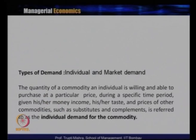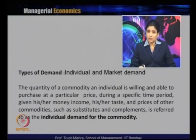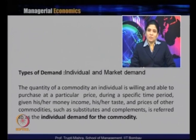There are different types of demand. The first is individual demand and market demand. Individual demand is the quantity of a commodity an individual is willing and able to purchase at a particular price during a specific time period, given their money income, taste, and prices of other commodities such as substitutes and complements. Simply put, it is what an individual consumer is willing and able to purchase at a particular price in a specific time period.